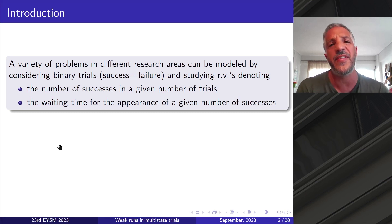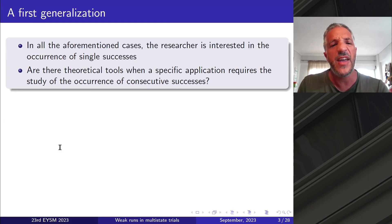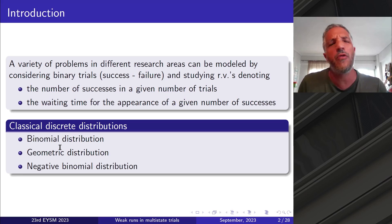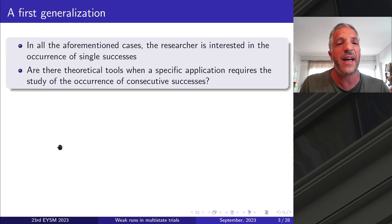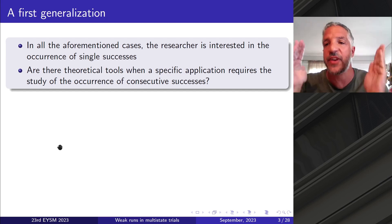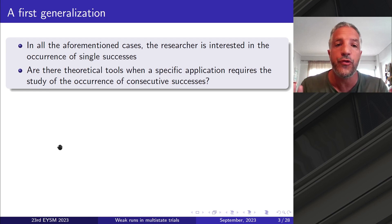A variety of problems in different research areas can be modeled by considering binary trials, which means success or failure trials, and studying random variables denoting either the number of successes in a given number of trials, or the waiting time for the appearance of a given number of successes. Therefore, the classical distributions arise, and we mean the classical binomial distribution, the geometric distribution, the negative binomial distribution.